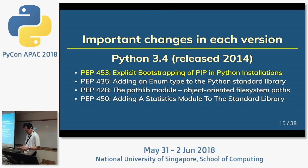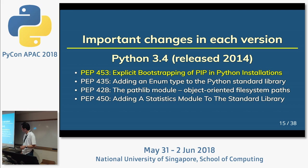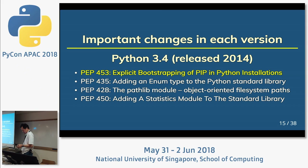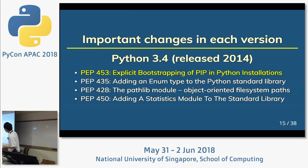Python 3.4, released in 2014. I think this version is a stable enough release for Python 3. It includes pip and adds an enum type — PEP 435.